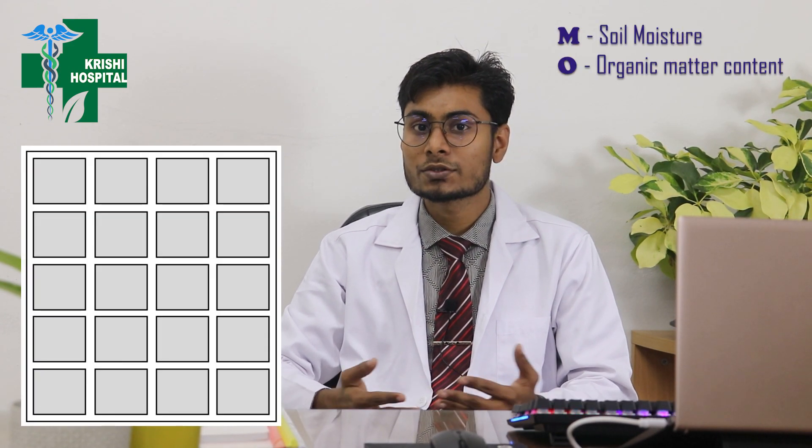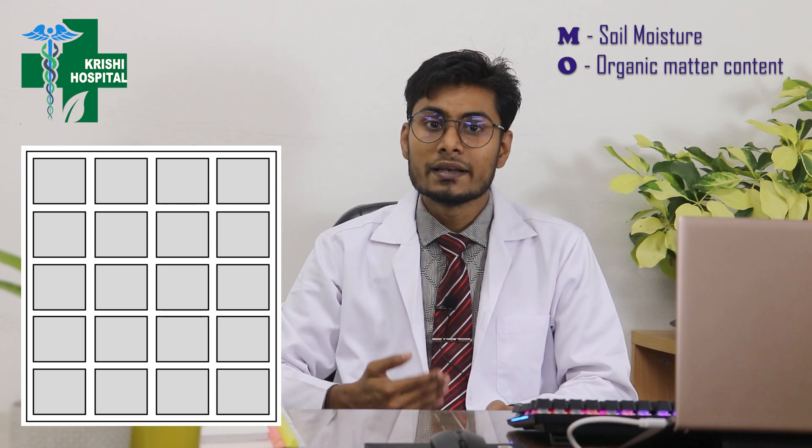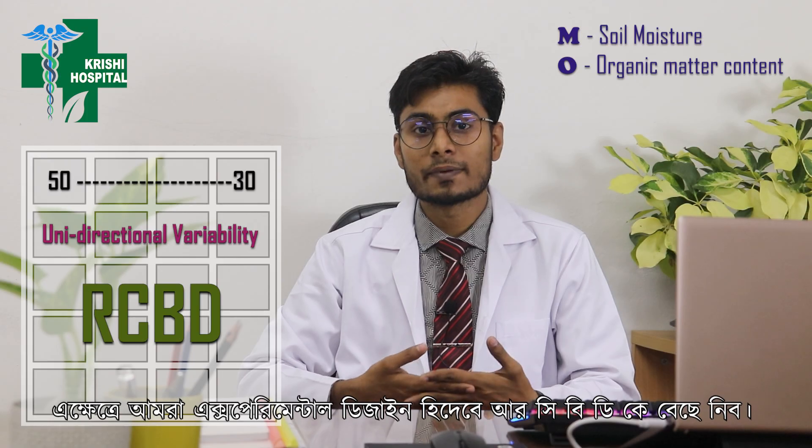RCBD and LSD are done in vivo or in field conditions where there is variability across the experimental environment. Consider a land with organic matter and soil moisture as variables. If the organic matter content is uniform but the moisture content drops from 50 to 30 from left to right, we have a unidirectional variability. In this case, we will use RCBD as our experimental design.